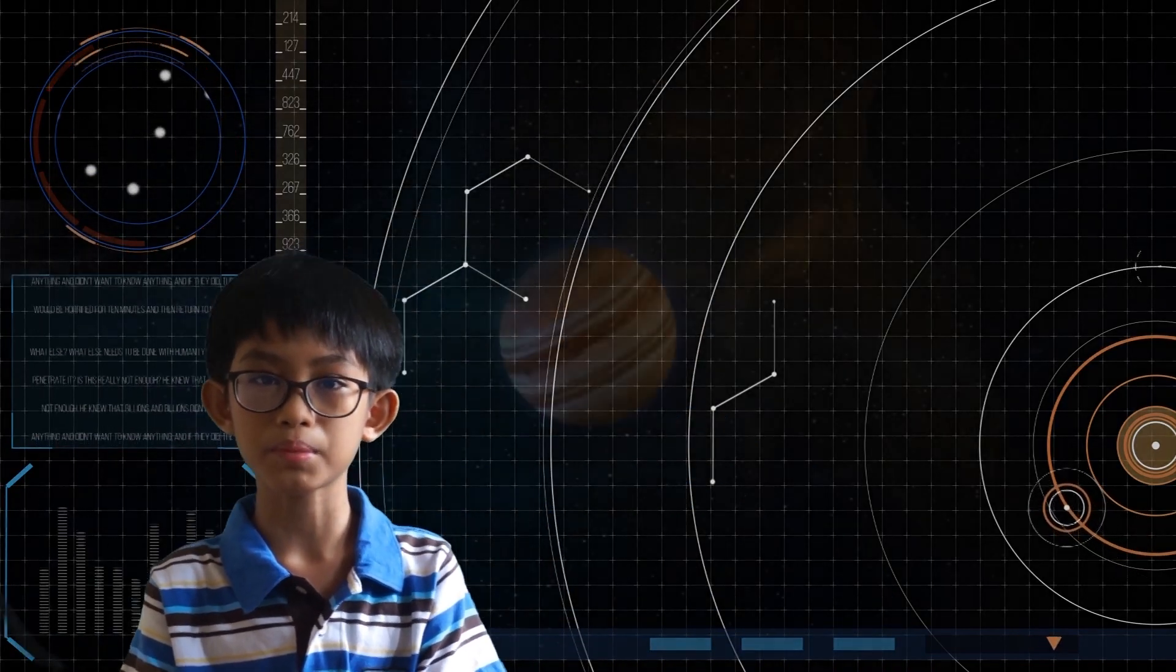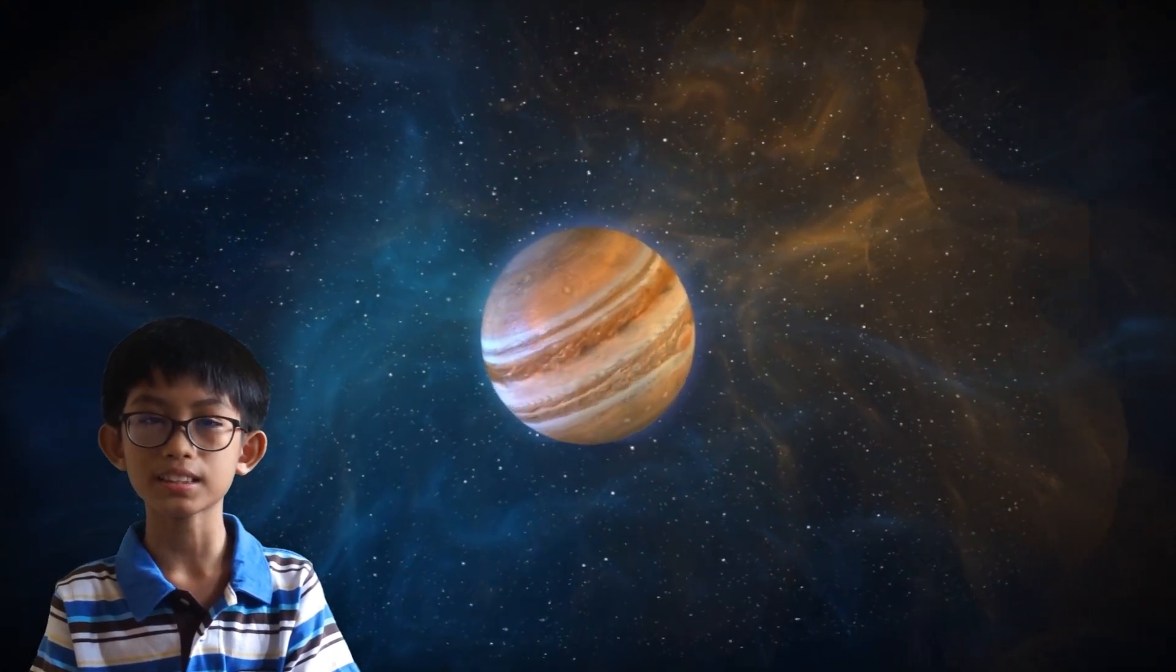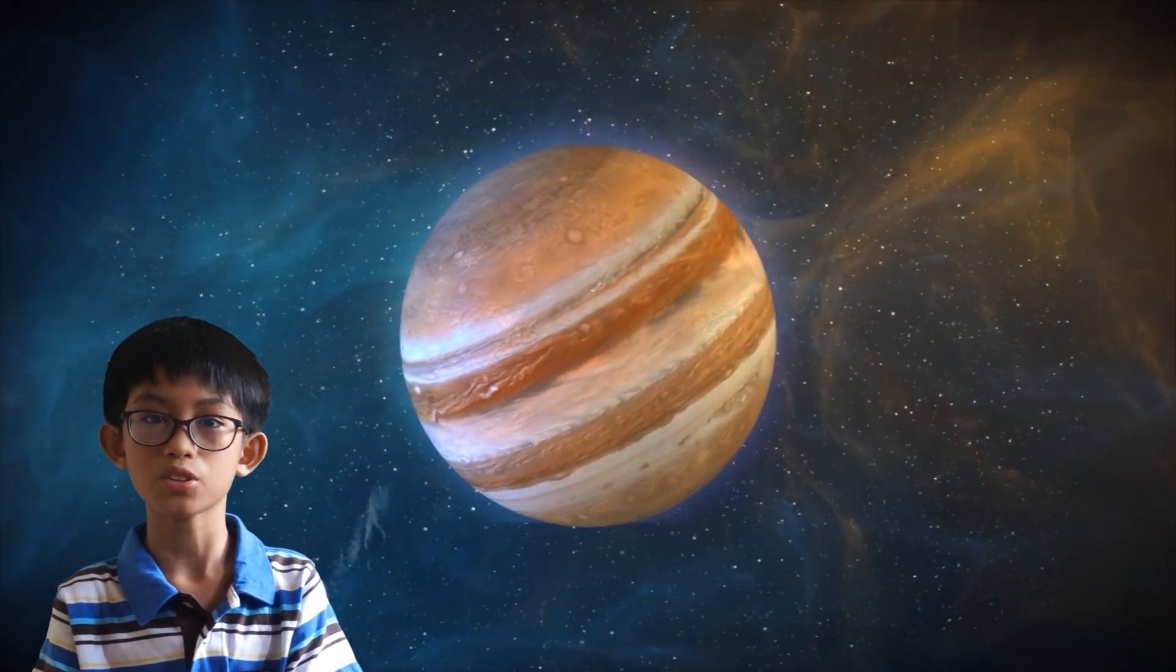Jupiter is the fifth planet from the Sun. It is the biggest of all the planets in our solar system. It is very windy and stormy.